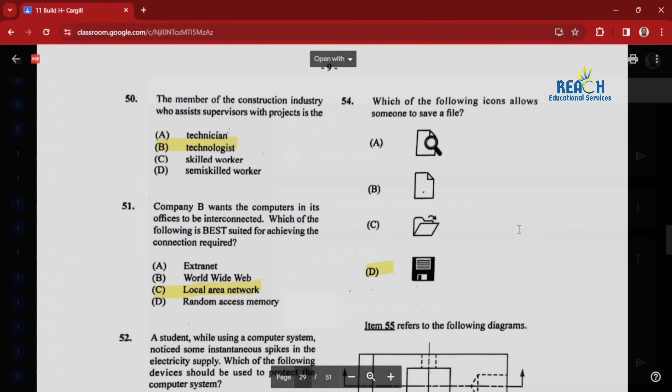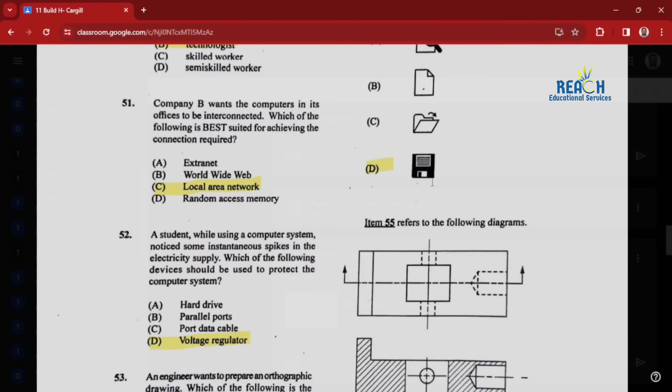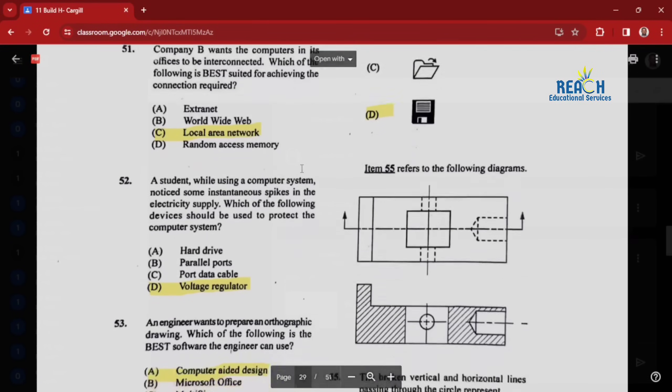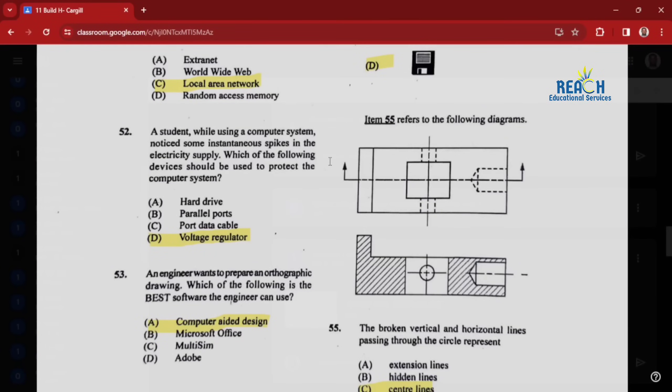Question fifty: the member of the construction industry who assists supervisors with projects is the technologist. Question fifty-one: Company B wants the computers in its offices to be interconnected. Which is best suited for achieving the connection required? That would be a LAN, local area network. Question fifty-two: a student while using a computer system noticed some instantaneous spikes in the electricity supply. Which device should be used to protect the computer system? That would be a regulator, more specifically a voltage regulator.